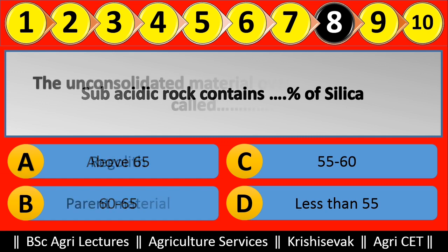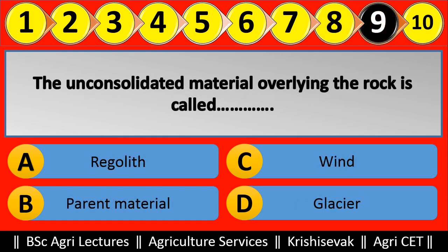Question 9: The unconsolidated material overlaying the rock is called blank. Options are: (a) Regolith, (b) Parent material, (c) Vine, (d) Glacier. Right answer is Regolith, option A.